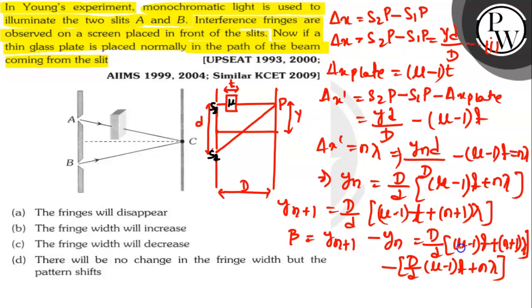On solving, we get beta equals capital D lambda by small d. And we also know that in Young's double slit experiment, the fringe width has a value of beta equals capital D lambda by small d.